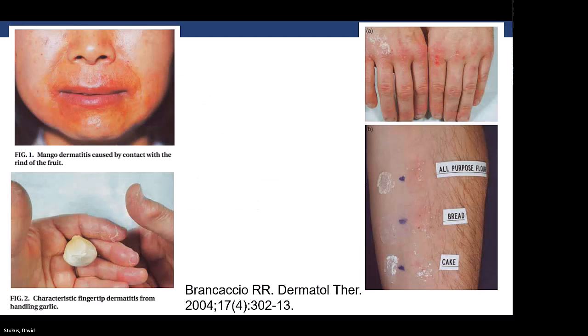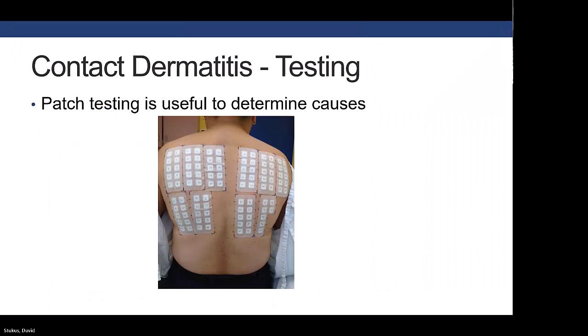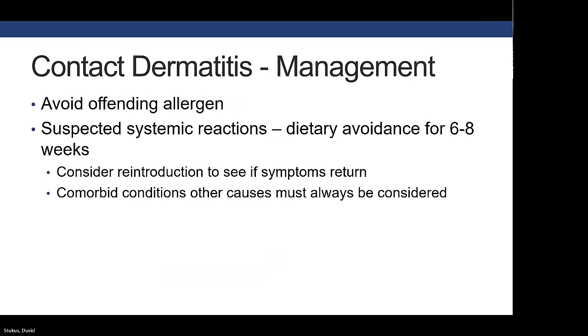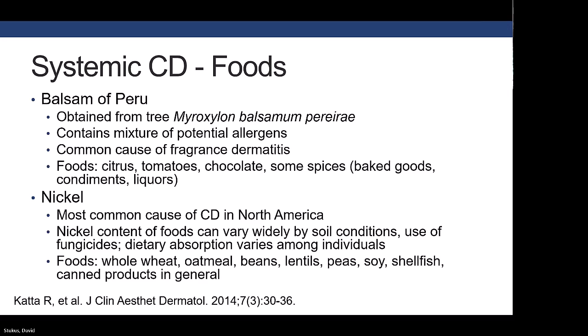Some examples of food allergic contact dermatitis — this is from mango. You'll see this more often in food workers. It's been described with wheat and various other foods. If they're touching things with bare skin on a regular basis and having rashes in those areas, we want to put this diagnosis into consideration. Patch testing can be very helpful here, just like other causes of contact dermatitis — patch testing foods can help establish exactly what the cause is. Management is avoidance as much as possible. If we think they have systemic reactions, we want to avoid for a couple of months then consider reintroduction to see if symptoms recur. For systemic contact dermatitis, balsam of Peru and nickel are probably the most common ones — nickel is found in our soil and has been associated with vegetables and fruits grown in the ground and anything that comes in a can.